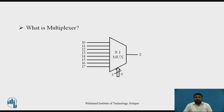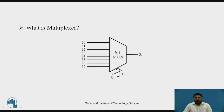A multiplexer has multiple inputs and one output. In this case, it is shown here — it is an 8-to-1 multiplexer. Eight inputs are there and one output is there. From these eight inputs, any one is selected and connected to the output with the help of three select lines. The number of select lines depends on the number of inputs, given by the formula 2 raised to n equals m, where m is the number of inputs and n is the number of select lines.